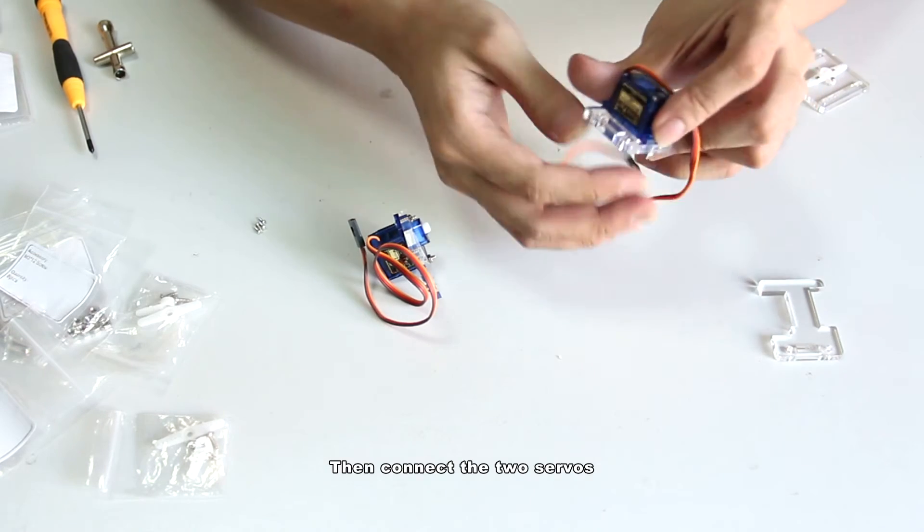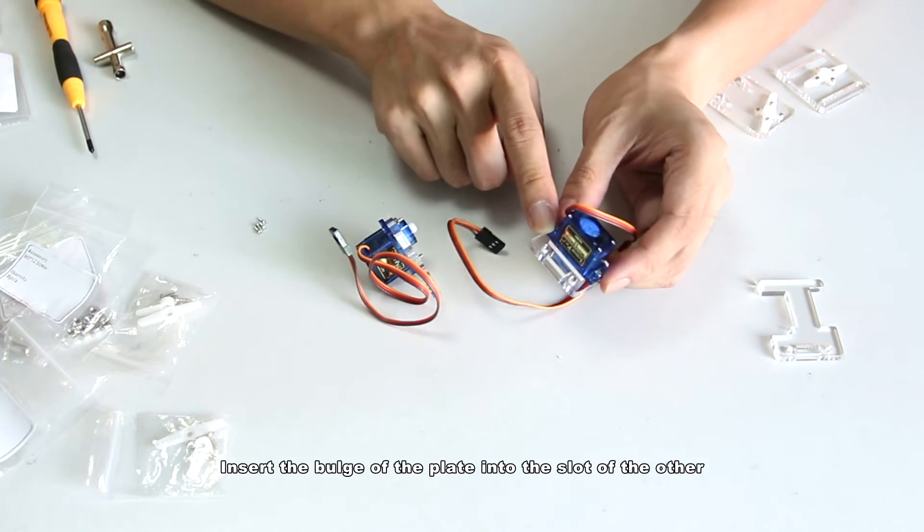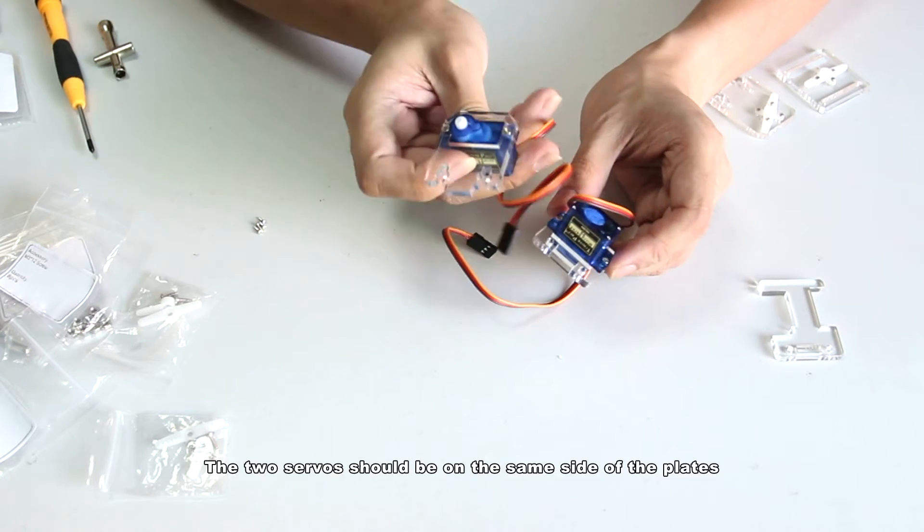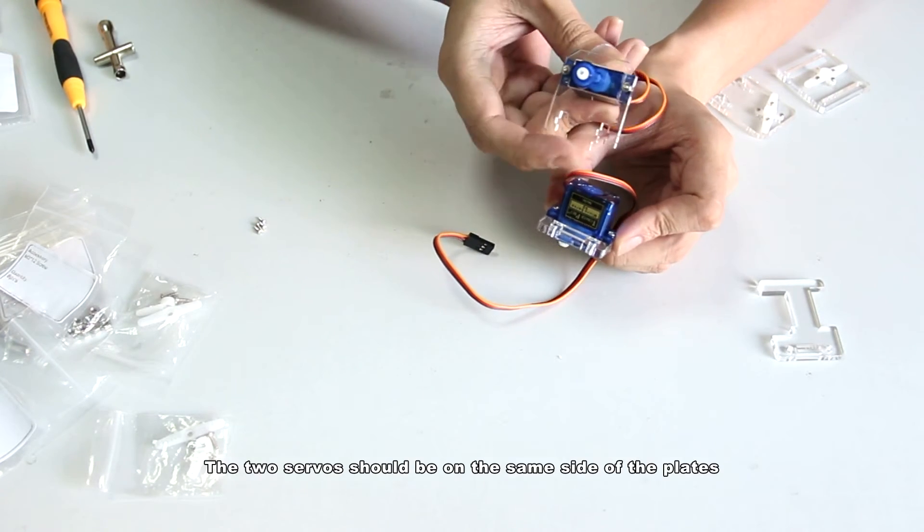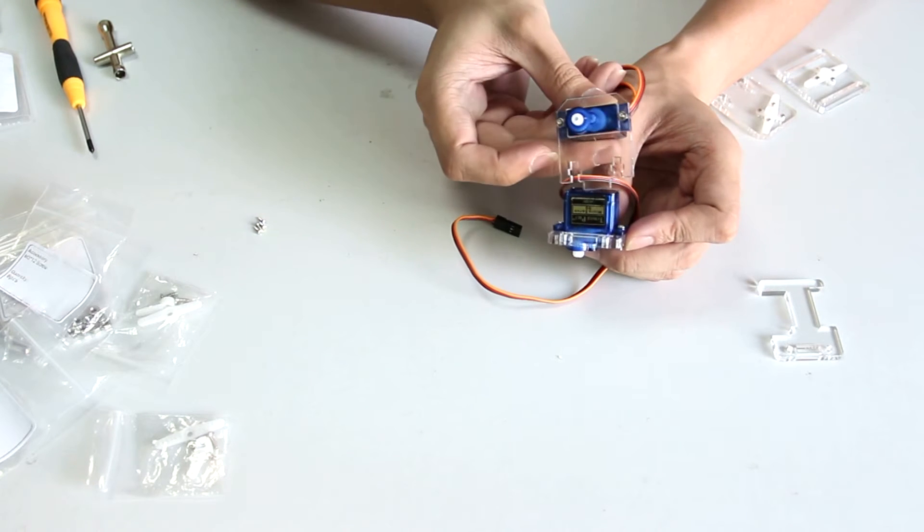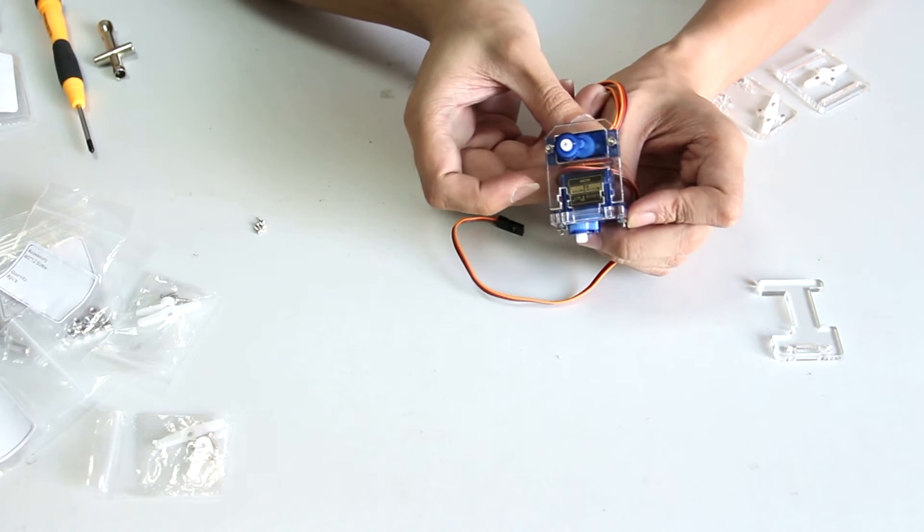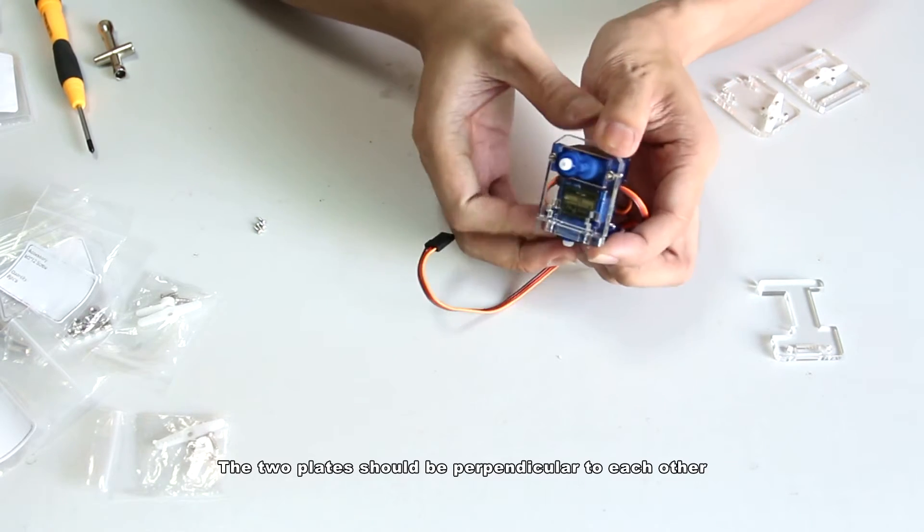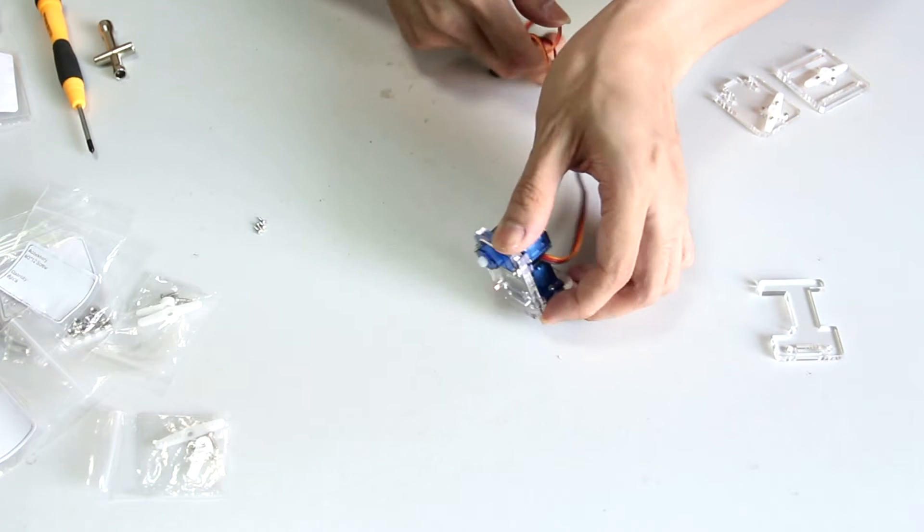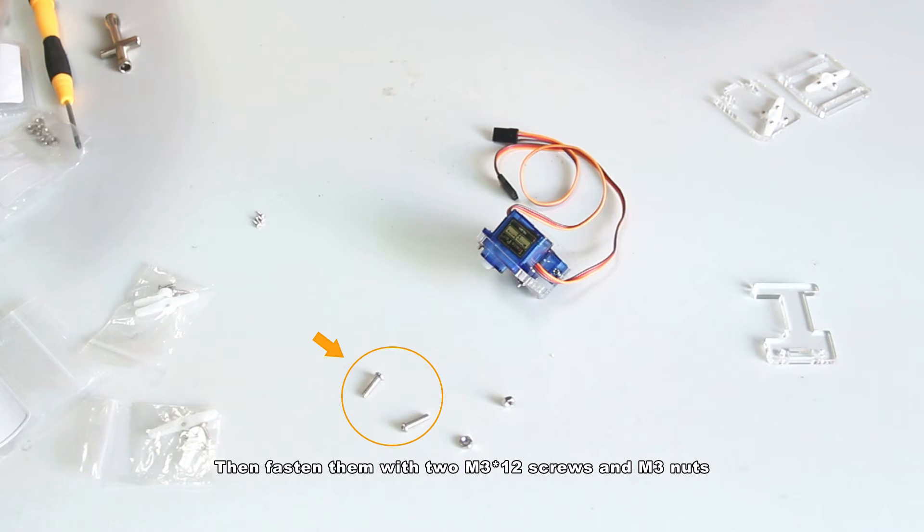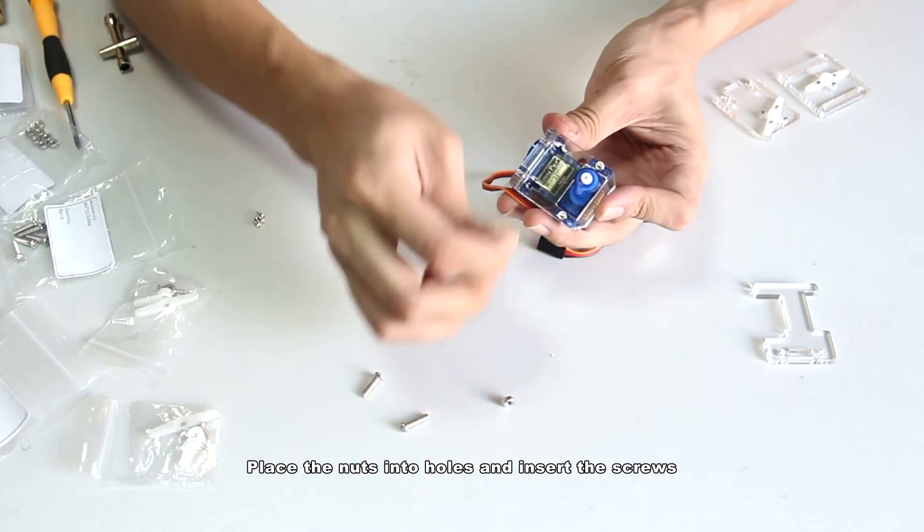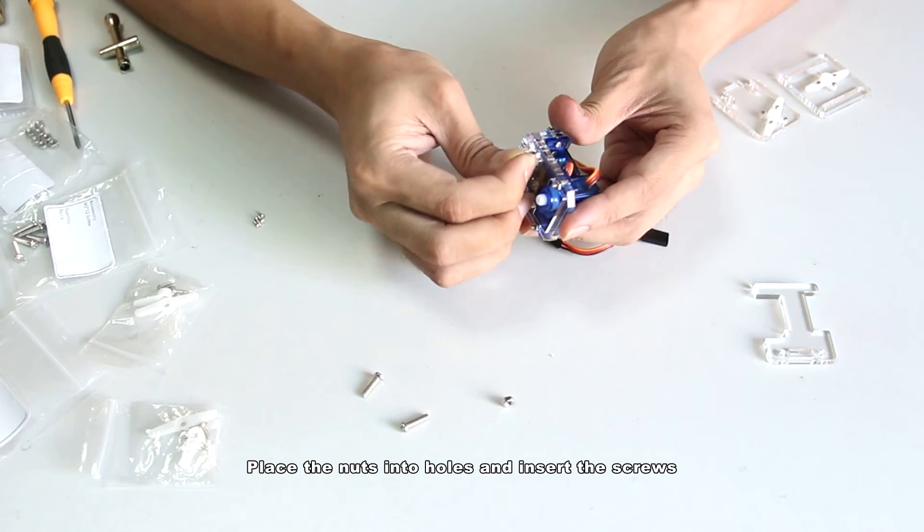Then connect the two servos. Insert the pouch of the plate into the slot of the other. The two servos should be on the same side of the plate. The two plates should be perpendicular to each other. Then fasten them with two M3x12 screws and M3 nuts. Place the nuts into the holes and insert the screws.